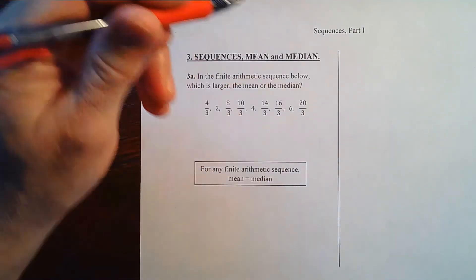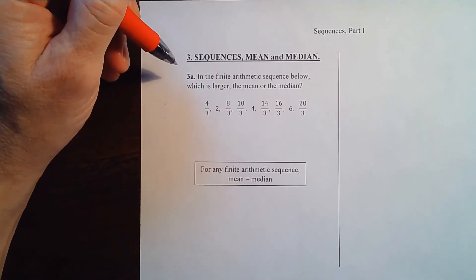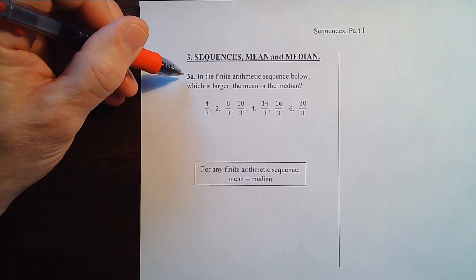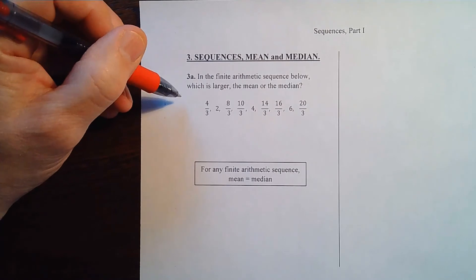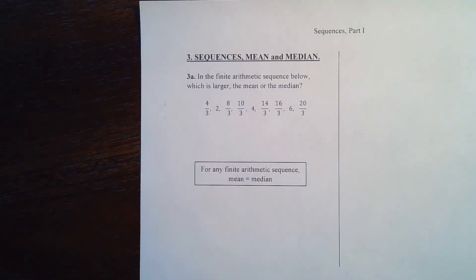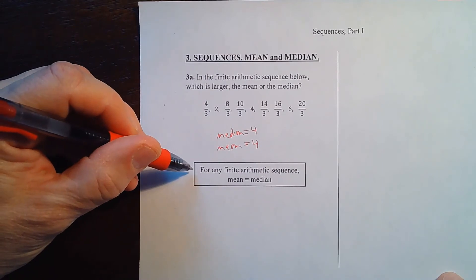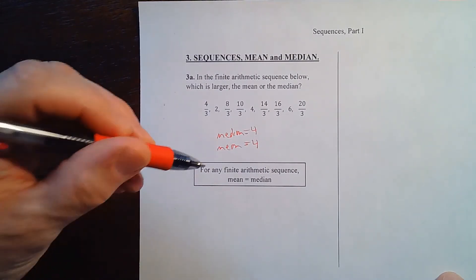Let's go to page three: sequences along with means and medians. If you've seen the videos on averages you'll have seen this before. In question 3a, for the finite arithmetic sequence shown, which is larger — the mean or the median? Calculate both and compare. The answer: the median is 4, the mean is 4. For any finite arithmetic sequence, the mean and the median are always equal. That's the end of part one — if you want to score in the high 20s or 30s, make sure you know everything in part two.